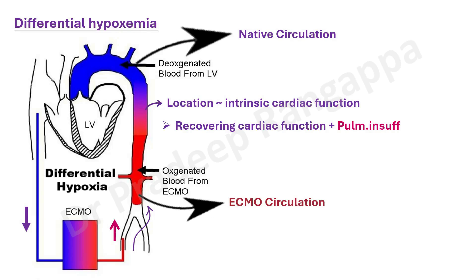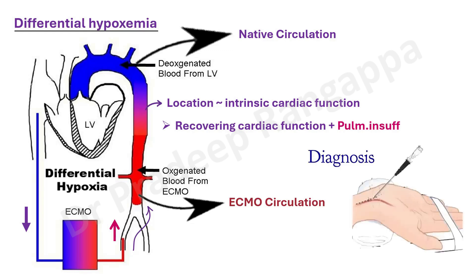Differential hypoxemia happens in VA ECMO with a recovering cardiac function. For our 39-year-old, once heart function completely resumed and his lung was also bad, differential hypoxemia set in. Diagnosis is made by taking blood gas at the right radial artery, because blood ejected from the arch of aorta goes to the innominate artery and then to the radial artery. You compare that with another sample from the femoral artery. The difference in oxygen levels confirms it — we call it harlequin syndrome, with a reported occurrence rate of around 8.8%.